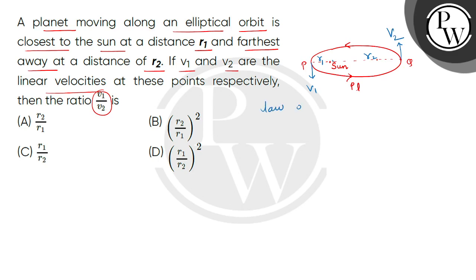Here, we can see that there is angular momentum conservation, because in this condition, external torque value is zero, so the angular momentum at point P is same as angular momentum at Q.